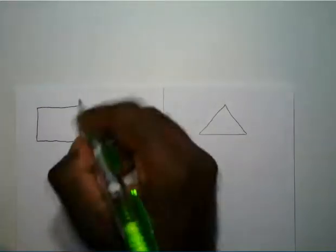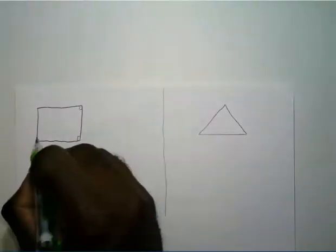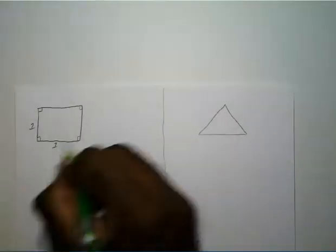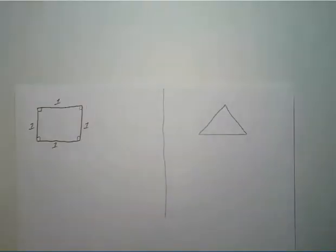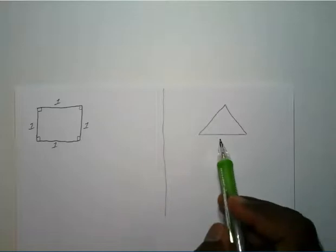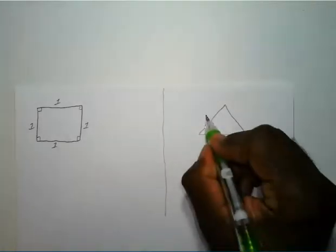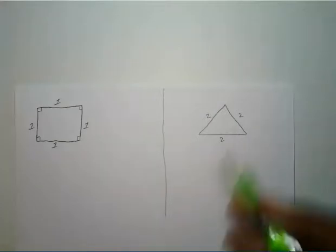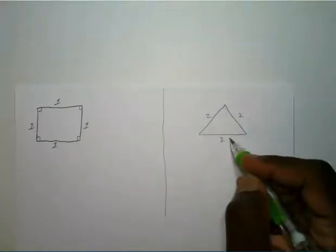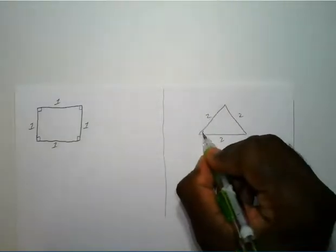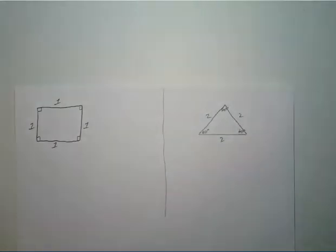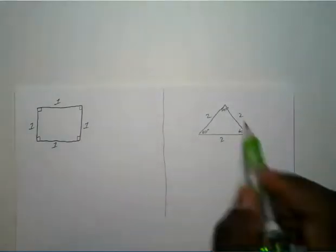Each corner of a square is 90 degrees, and we'll have each side equal one. For the triangle, we're going to have each of the sides equal two. Since all the sides are equal, this is an equilateral triangle, and since the inside of a triangle always equals 180 degrees, each angle is 60 degrees.